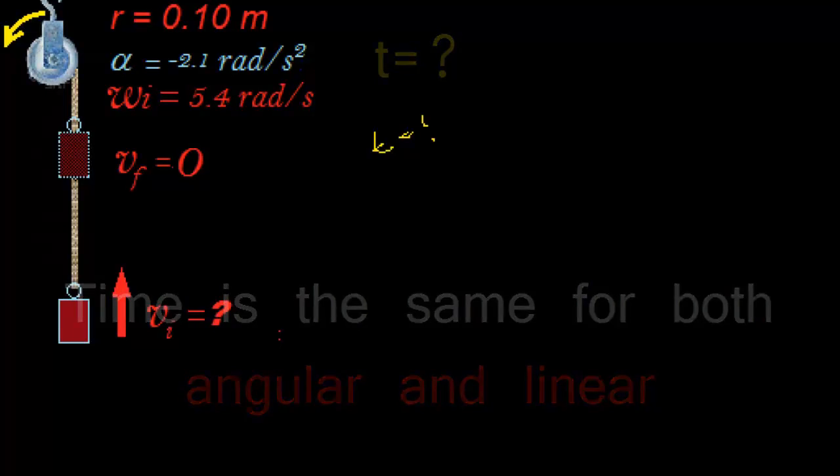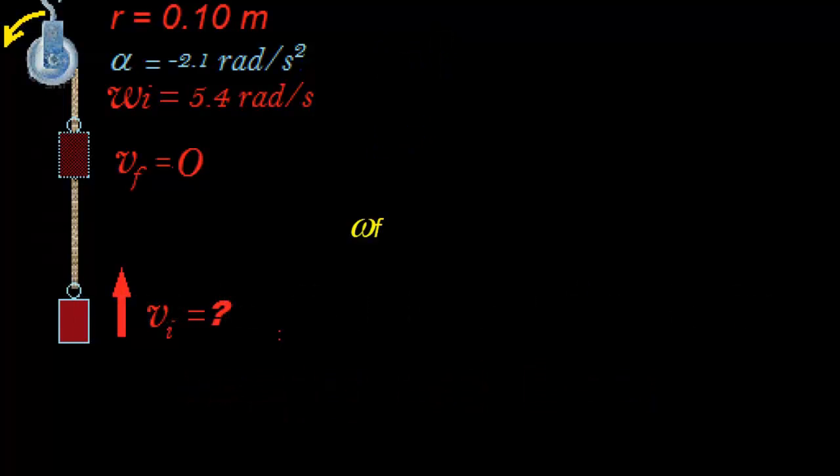So what do we need to know here? We know that the final angular velocity equals 0, which equals initial velocity plus acceleration times time. The final angular velocity is 0, equals 5.4 radians per second,